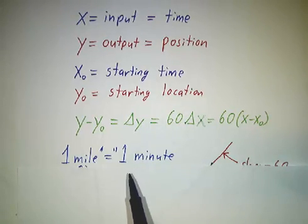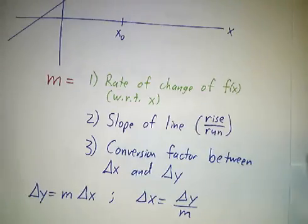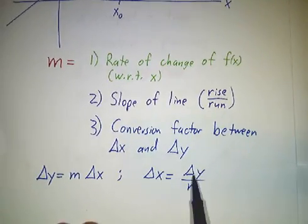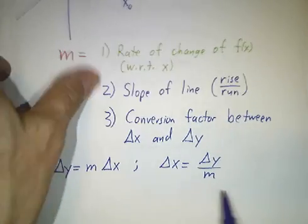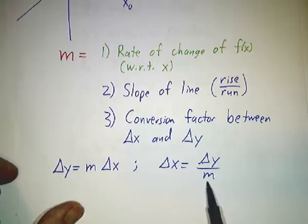Because you automatically do this conversion between distance and time using the 60 miles an hour as your conversion factor. If you were doing 30 miles an hour and you were 10 miles away, you'd say you were 20 minutes away. Because the change in time is the change in distance divided by m. If m is 60, a mile is a minute. If m is 30, a mile is 2 minutes.